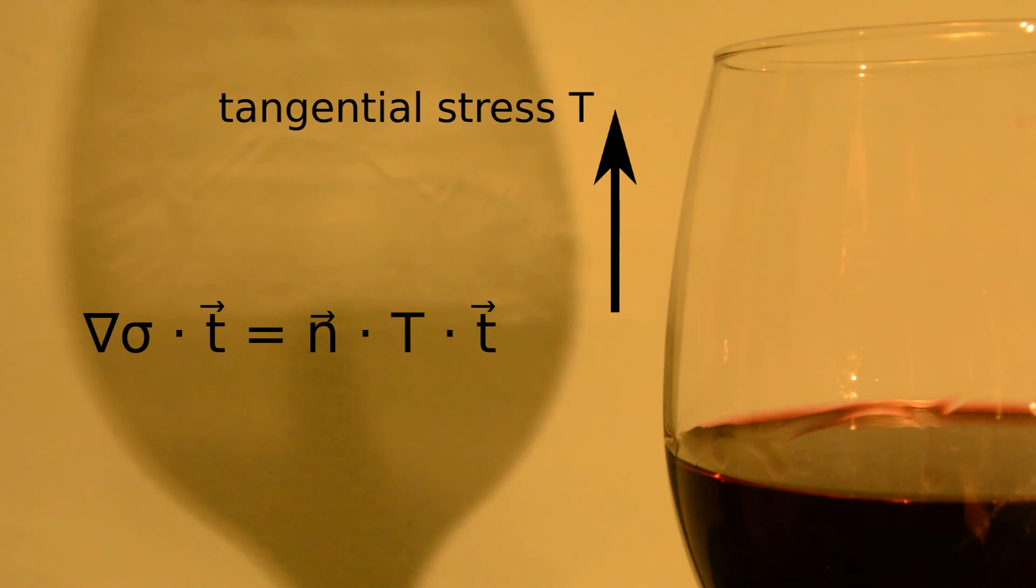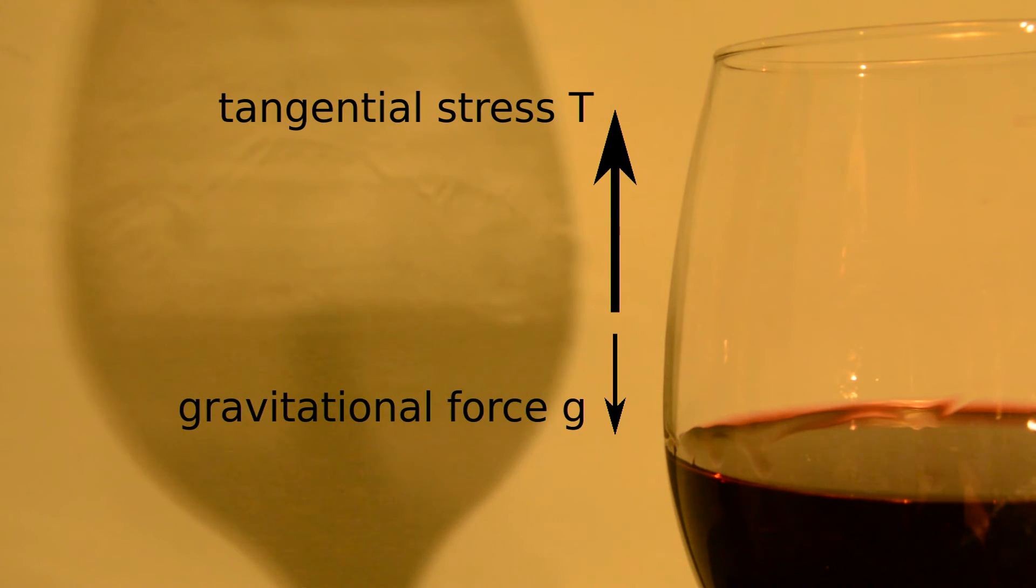Initially, the stress due to the surface tension gradient is larger than the opposing gravitational force such that there is a net force which accelerates the wine from the bulk part up the wall of the glass. This results in an accumulation of the fluid at the upper limit of the film and droplets start to form. Viscosity is also acting against the stress but is neglected in this demonstration.